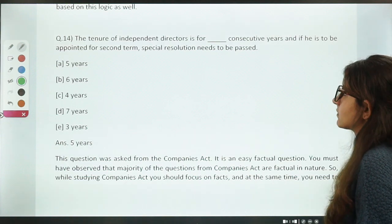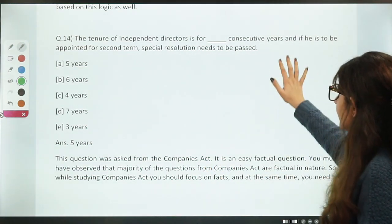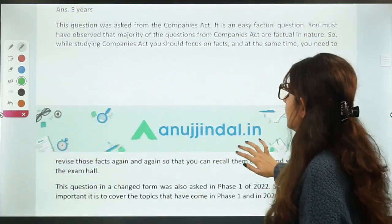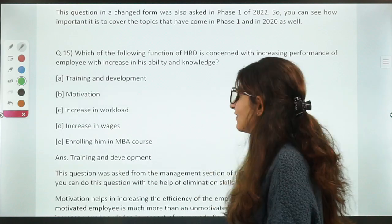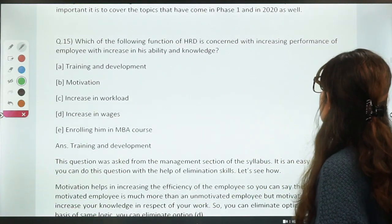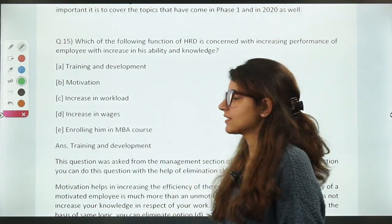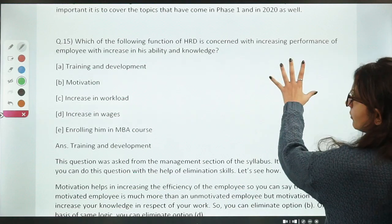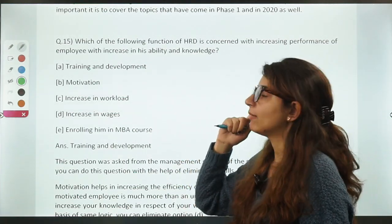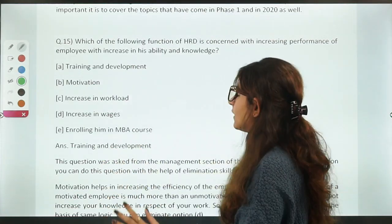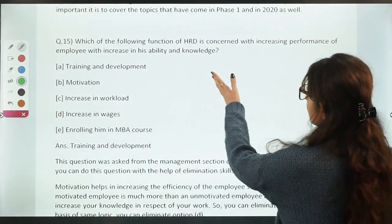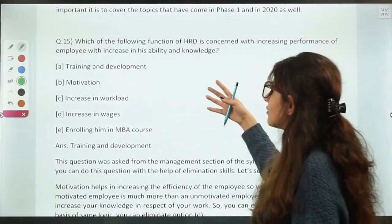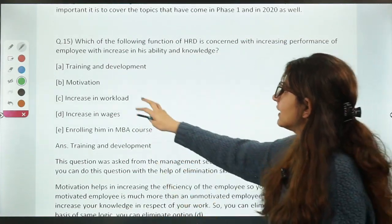The tenure of independent directors is for how many consecutive years? A very easy Directors question from Companies Act. The answer is 5 years per term. Next: which of the following functions of HRD is concerned with increasing the performance of an employee and also his ability and knowledge? A very easy management question. Options included increase in workload and wages increase, but neither directly improves ability and knowledge. The correct answer is training and development.